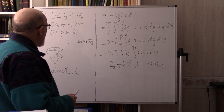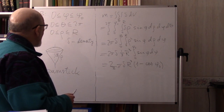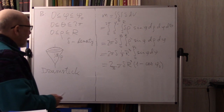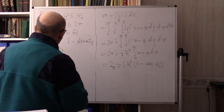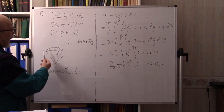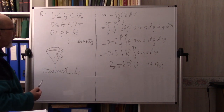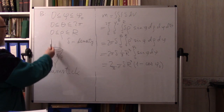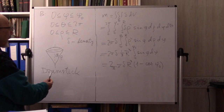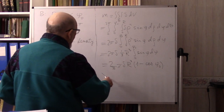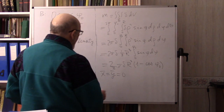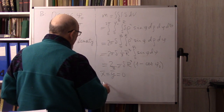Now we want to find the center of mass. Because this is a body of revolution with constant density, its center of mass should be on the z-axis, so x̄ = 0 and ȳ = 0. We only need to find z̄.